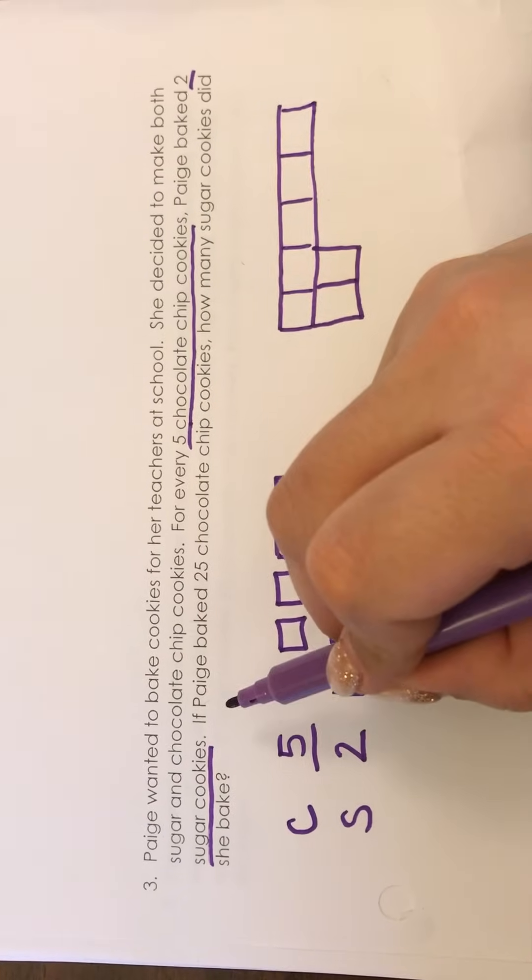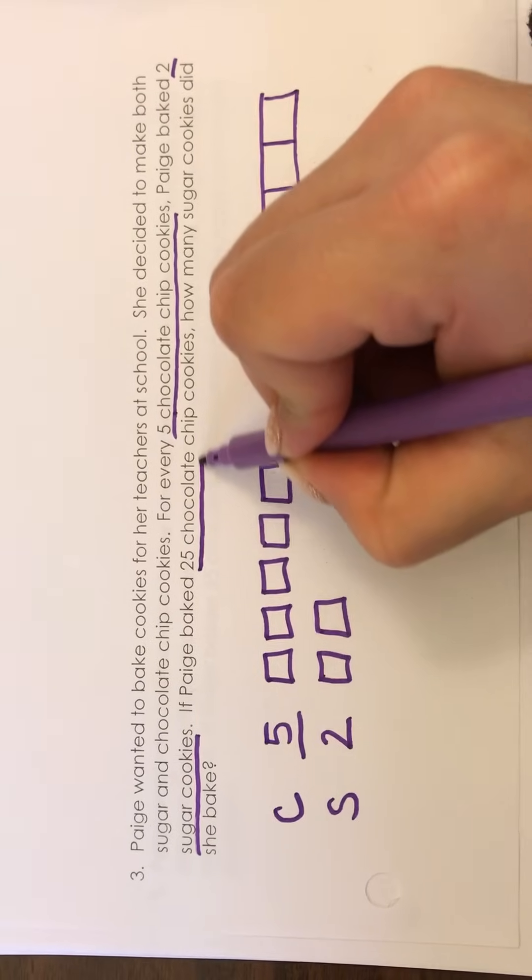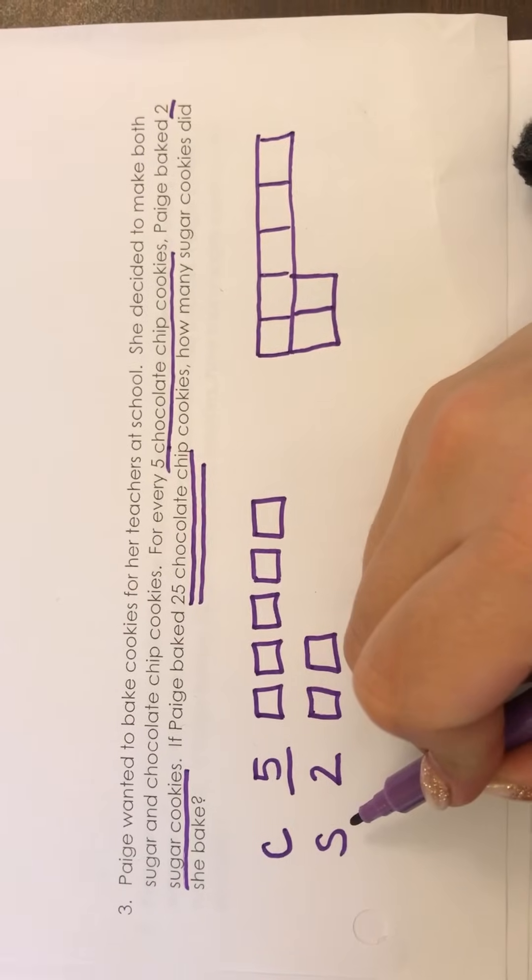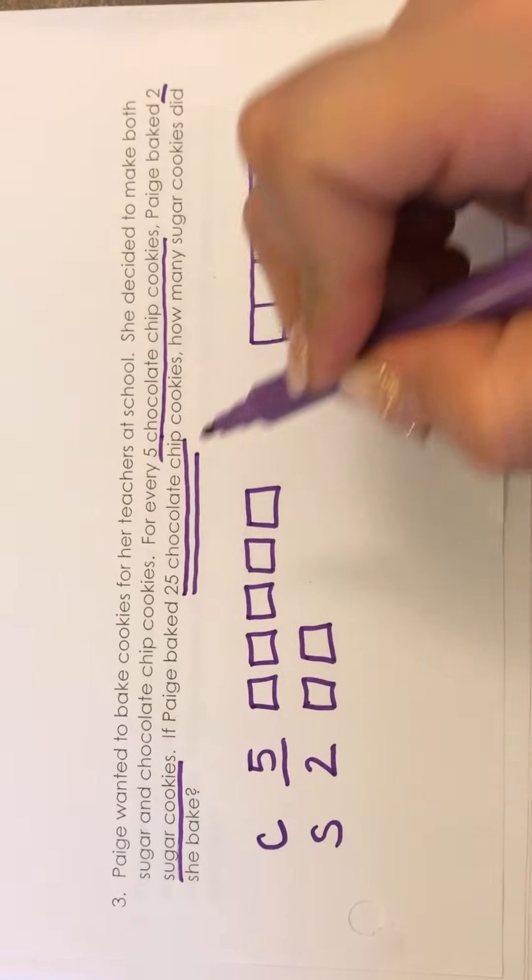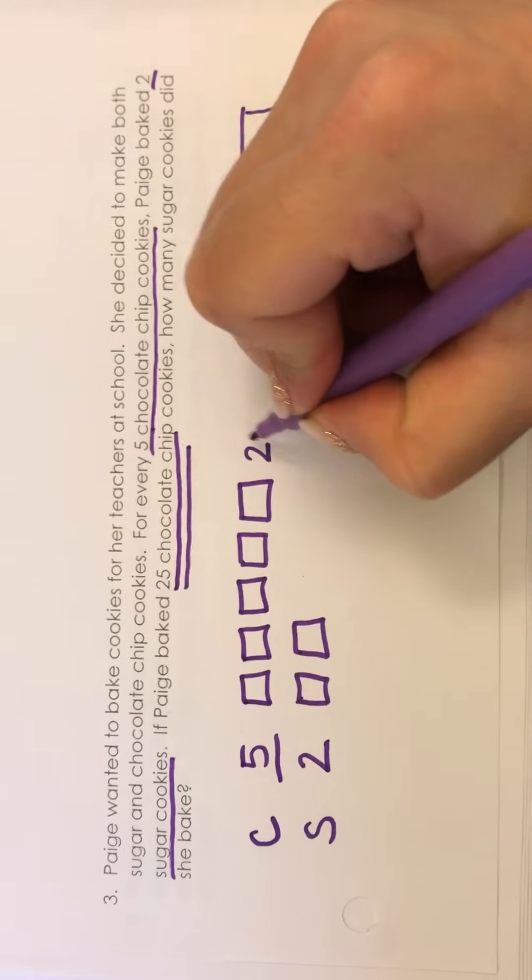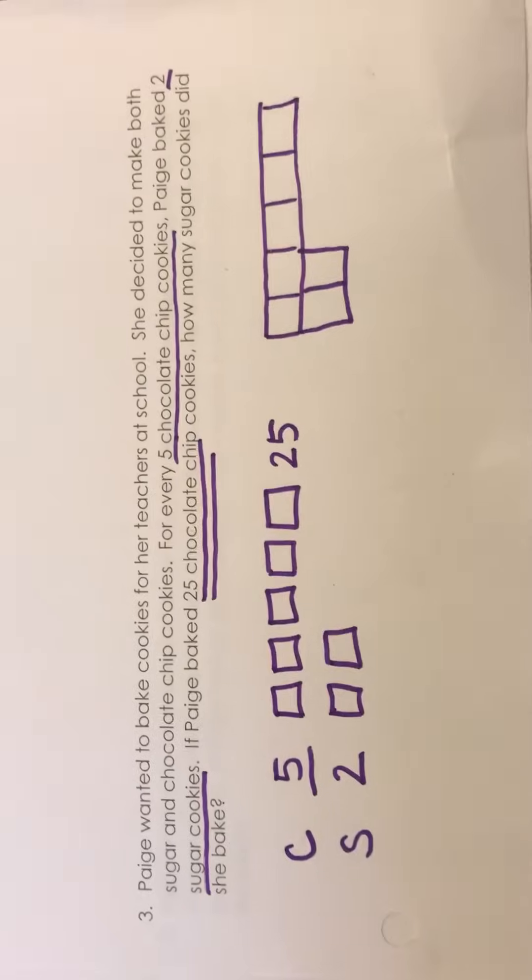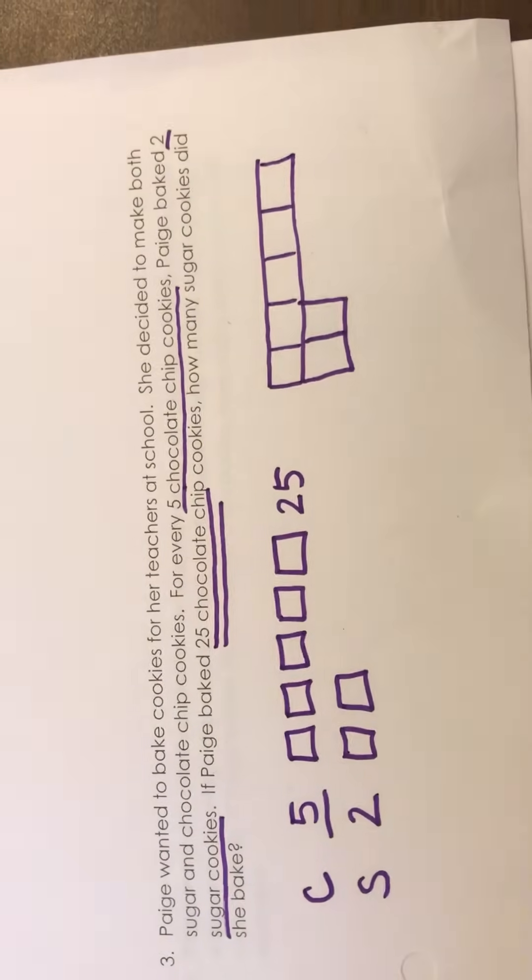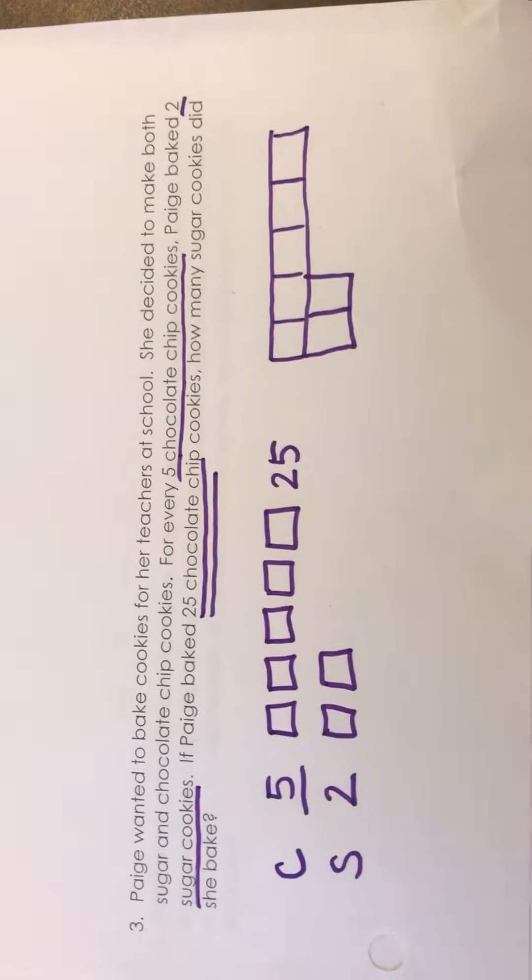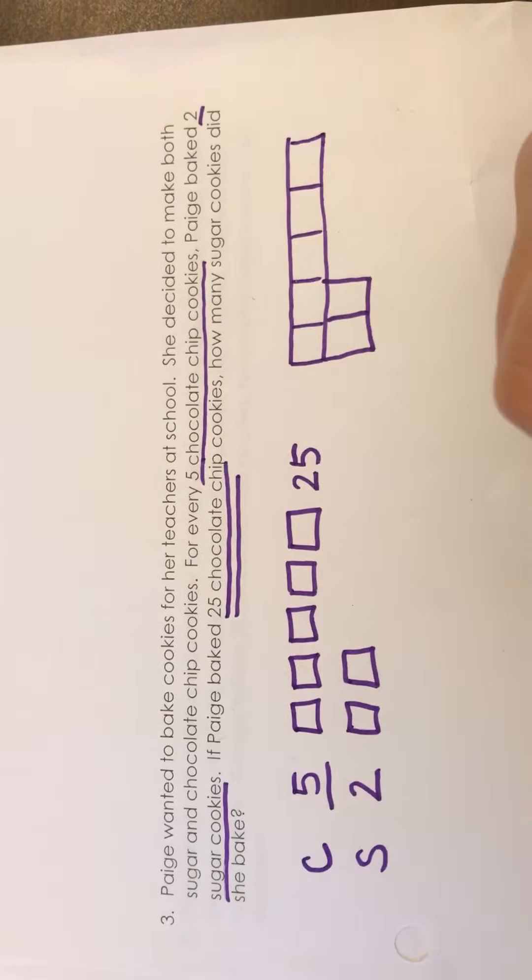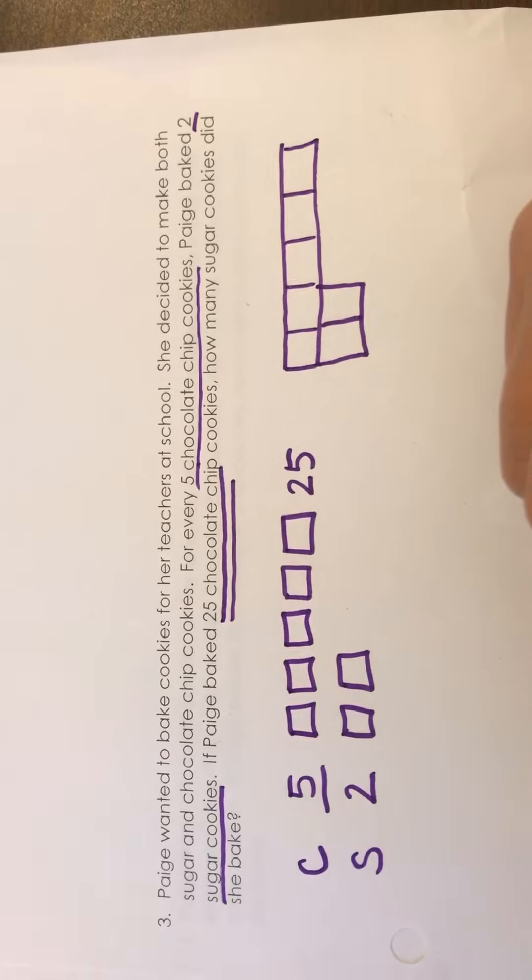Now it says right here that Paige baked 25 chocolate chip cookies. So I'm not going to put the 25 with the S because that stands for sugar and it tells me chocolate chip. So I'm actually going to put my 25 with my chocolate chip. Now I need to think the point of tape diagrams is to fill your boxes. So I want to say five times what is going to give me 25 that I can fill my boxes in with.